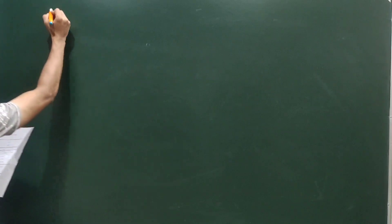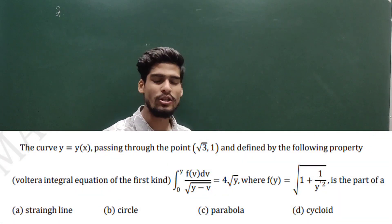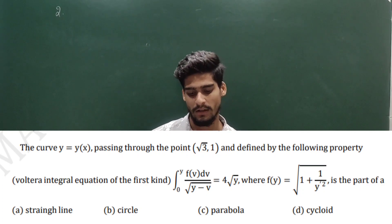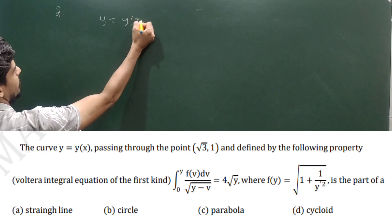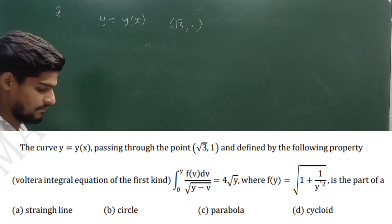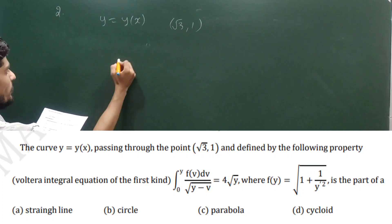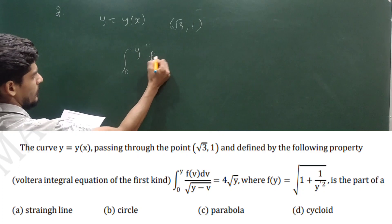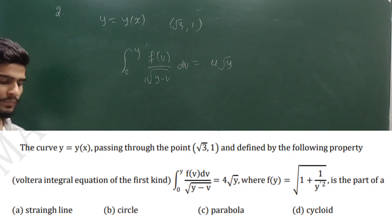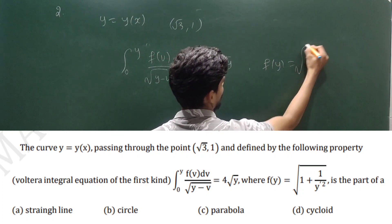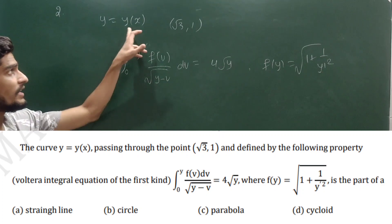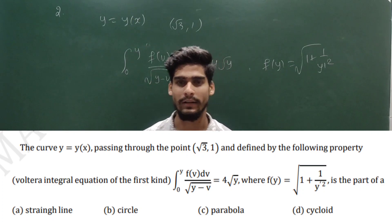The next question is a little complicated. When you study integral equations, you will study the Laplace transform with convolution. The question asks for the curve y = y(x) passing through the point (√3, 1), defined by the property ∫₀ʸ f(v) · √(y − v) dv = 4√y, where f(y) = √(1 + 1/(y')²). Then determine if this y is part of a straight line, circle, parabola, or cycloid.